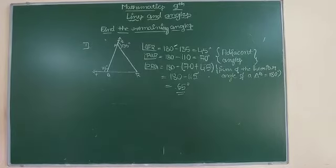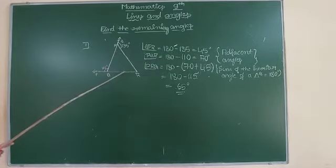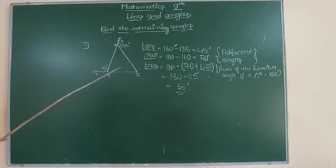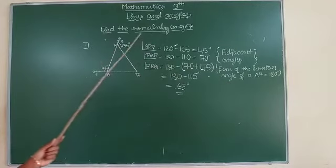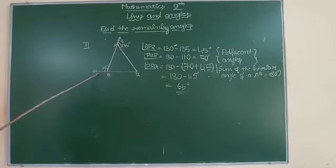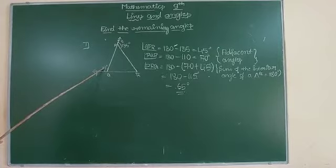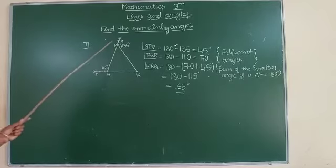Hello students. In earlier classes you are familiar with two statements: the sum of the interior angles of a triangle is 180 degrees, and if any one side of a triangle is extended, the exterior angle formed is equal to the sum of the two interior opposite angles. Here, angle TQP is an exterior angle and it is equal to the sum of the interior opposite angles.